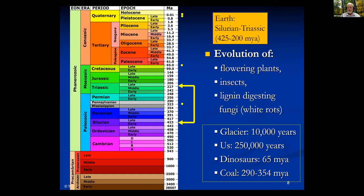That was a long time period. At the end of it, the white rots ensured there would not be massive buildups of wood. The area between the Silurian and Triassic periods is when the flowering plants were evolving - there were tree ferns before that. This is also when the insects were beginning to evolve. The insects co-evolved with the flowering plants: the flowering plants benefited from pollinators, and the pollinators benefited from the pollen and nectar. That's called co-evolution.